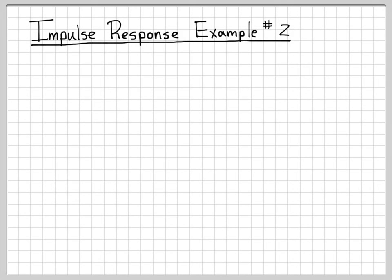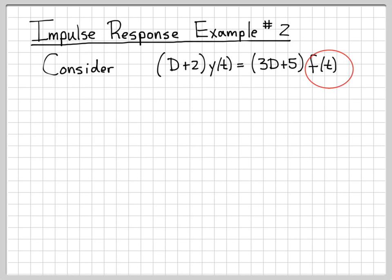In this video, we're going to look at a linear system described by a differential equation, and we are going to figure out the impulse response of the system. So here is the system. It's a differential equation relating the output of the system y(t) to the input of the system f(t). And what we would like to do is find h(t), the impulse response of the system.